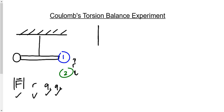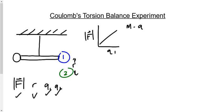Coulomb does three experiments. In the first experiment, he gets a graph of force versus Q1 that gives a straight line. The manipulated variable is always on the x-axis — so here Q1 is the manipulated variable. The responding variable, on the y-axis, is force. The important control variables would be Q2 and R — we can only change one variable at a time.